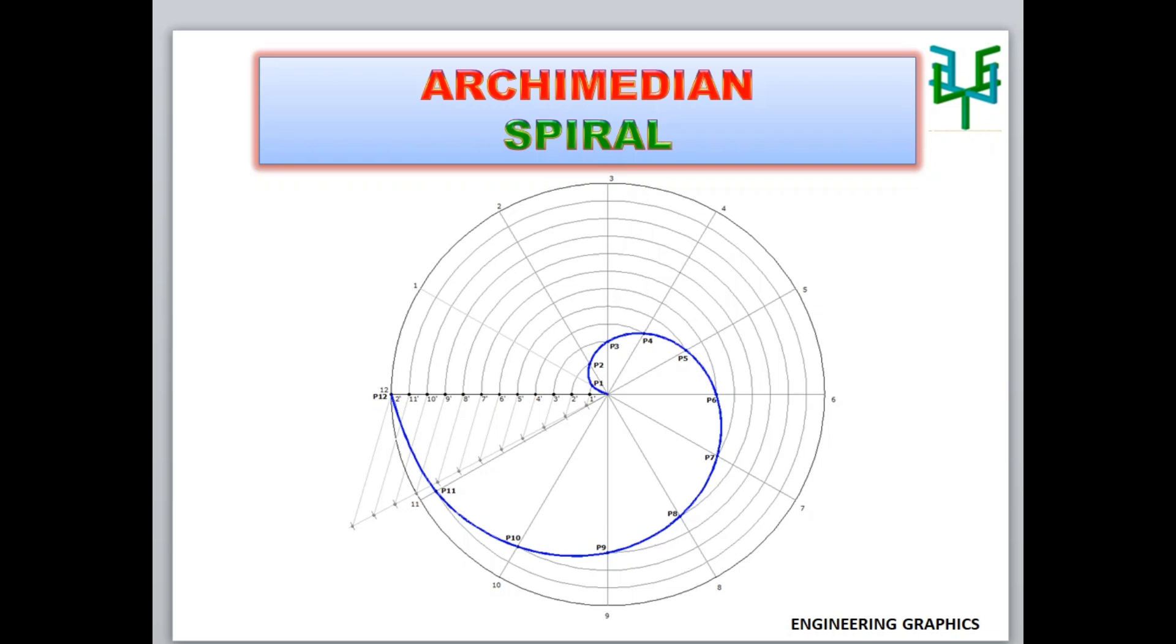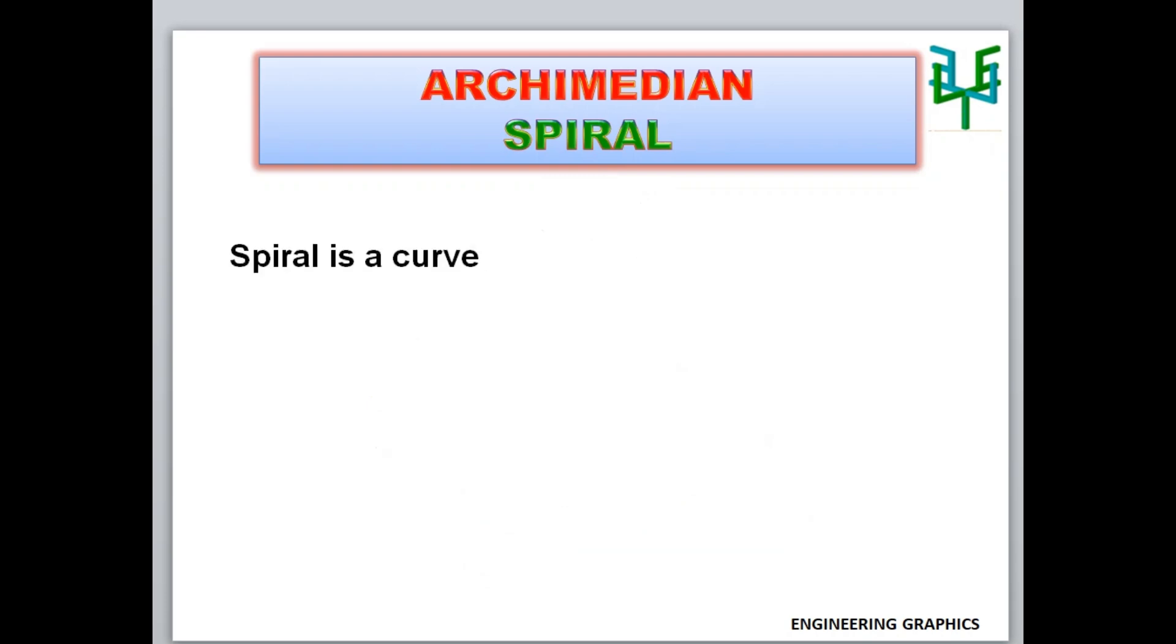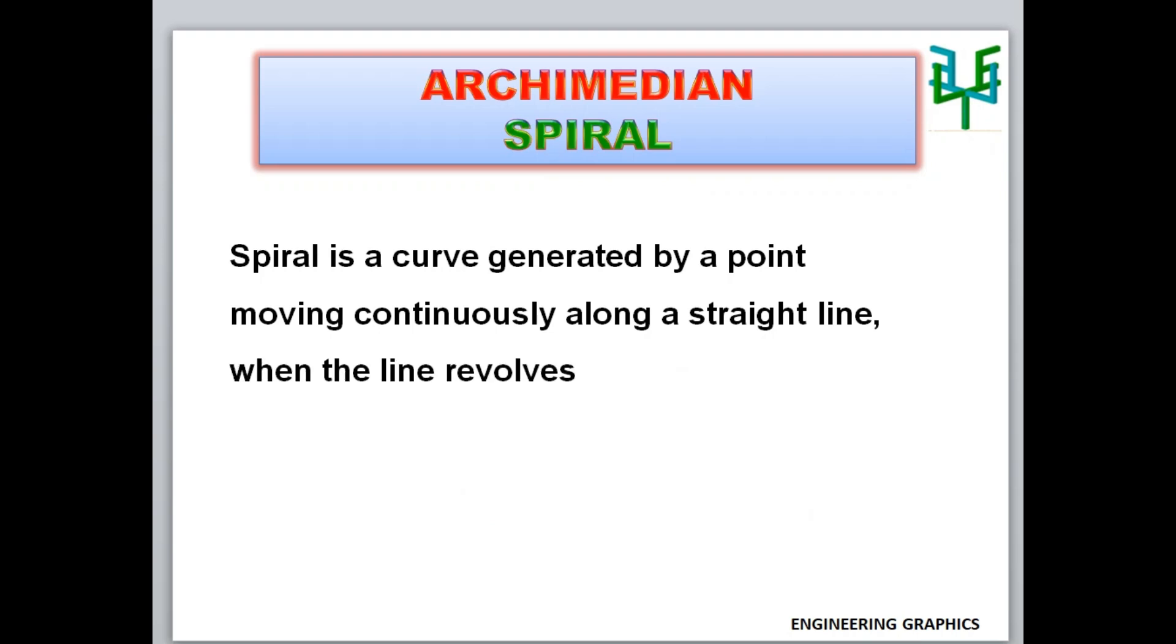This video explains the construction procedure of an Archimedean spiral. A spiral is a curve generated by a point moving continuously along a straight line where the line revolves about its end point.